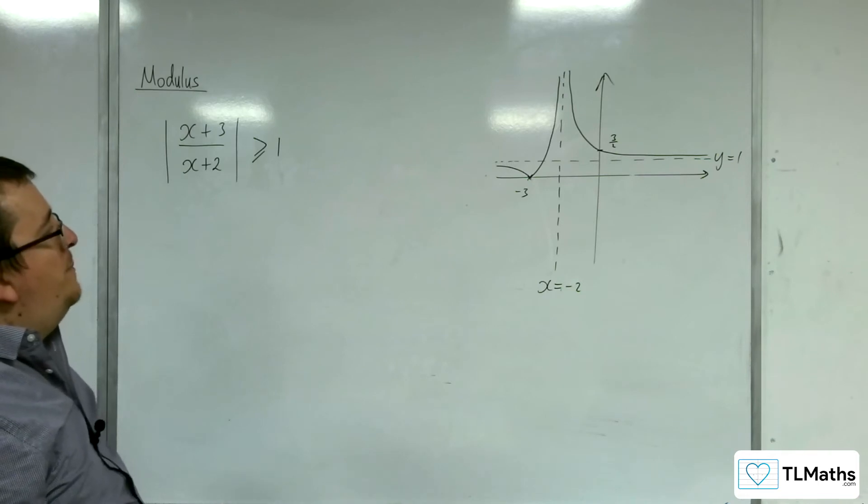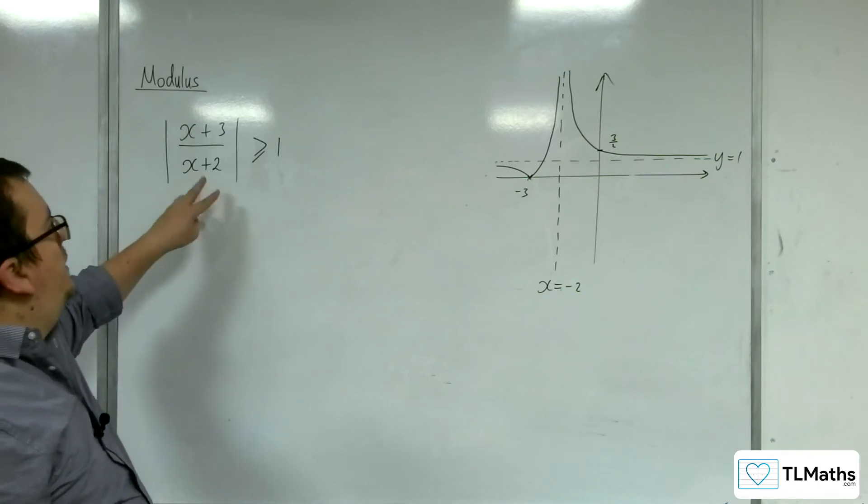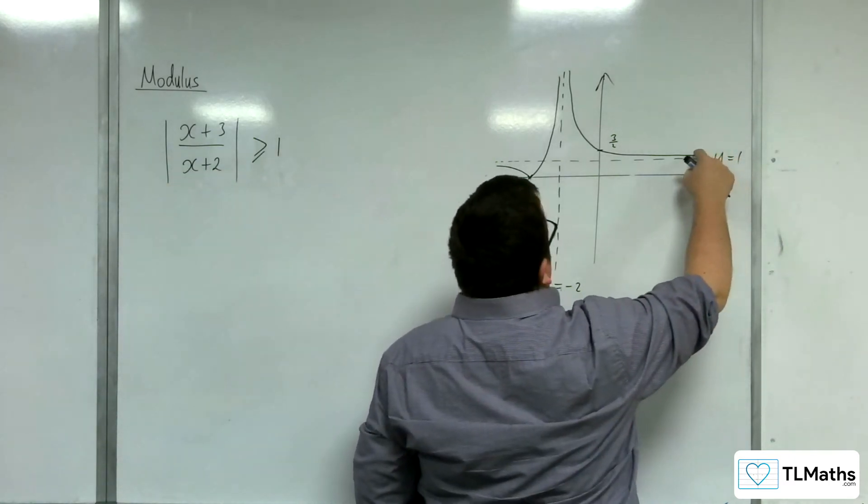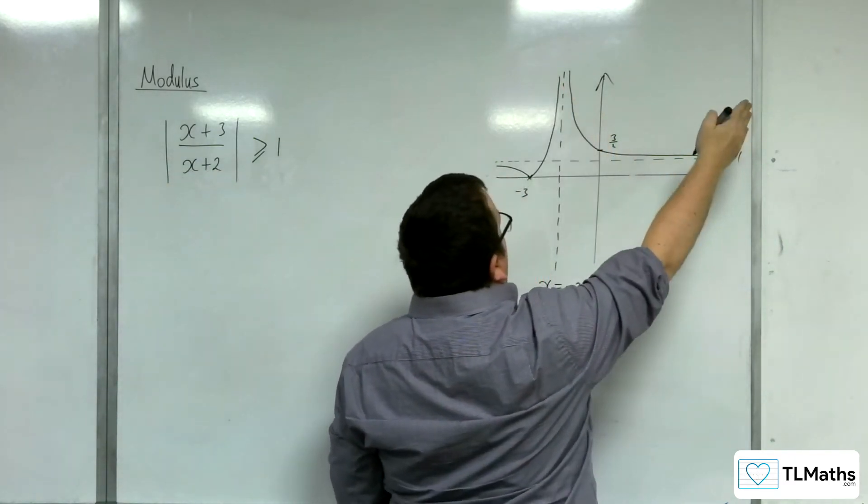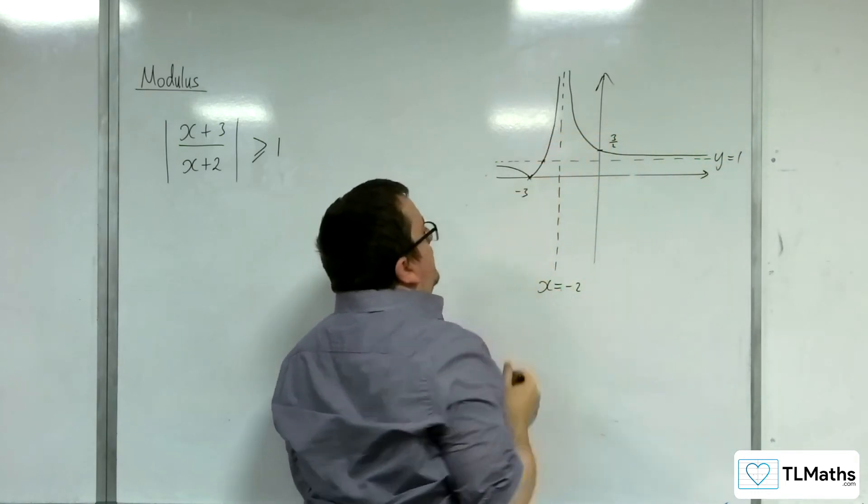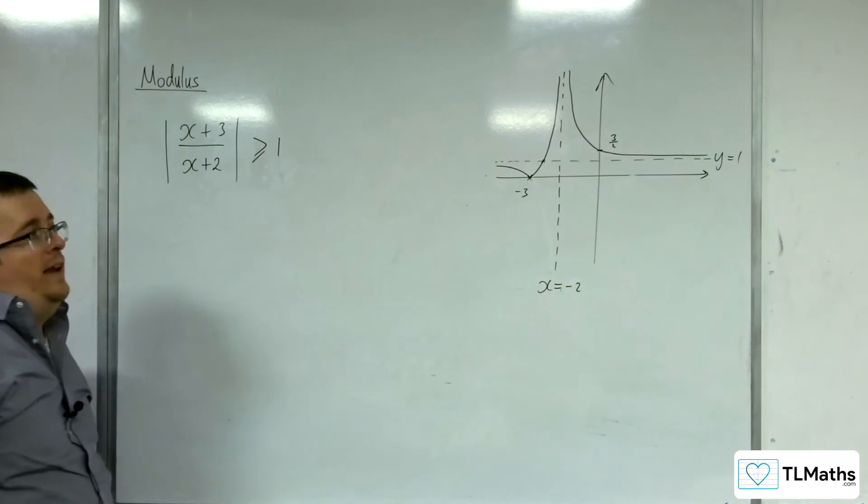So the question then becomes: where is the graph above or equal to 1? Now we know it's above it when x is greater than minus 2, but we need to work out this point here where the graph is hitting 1.